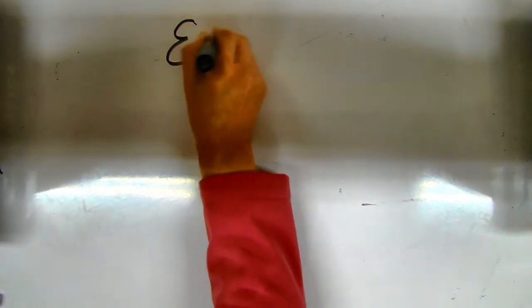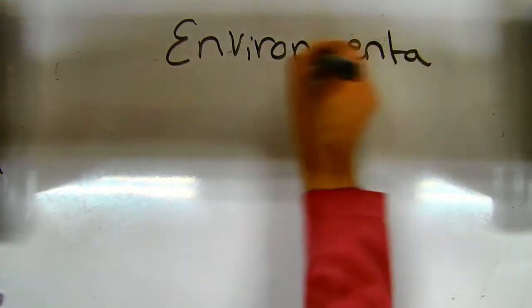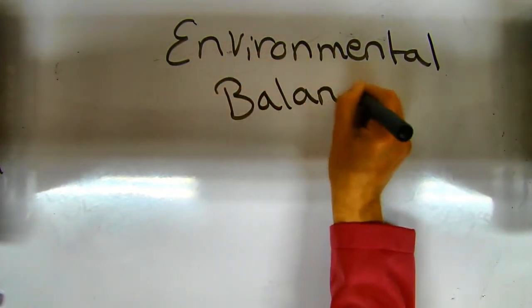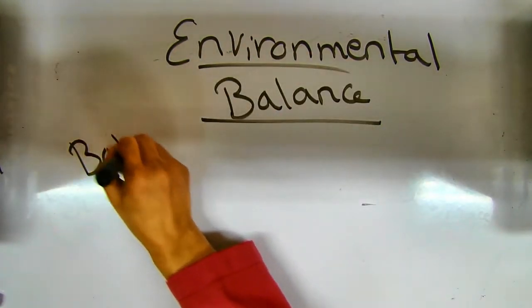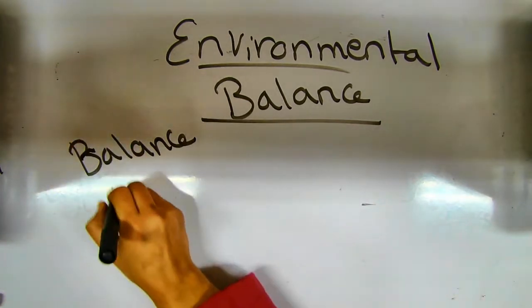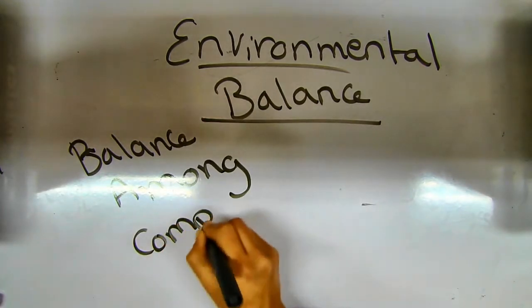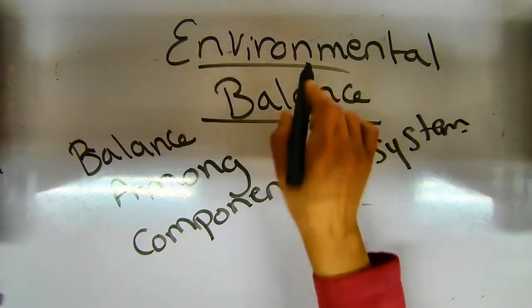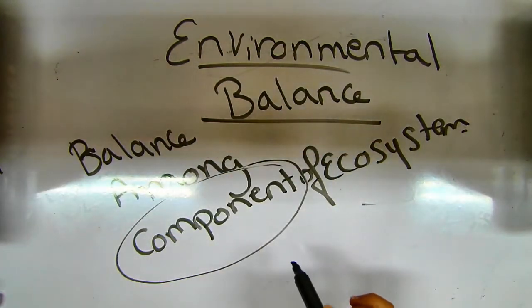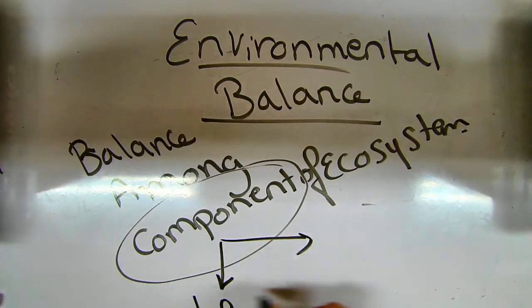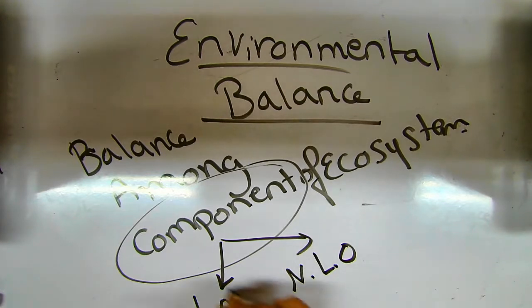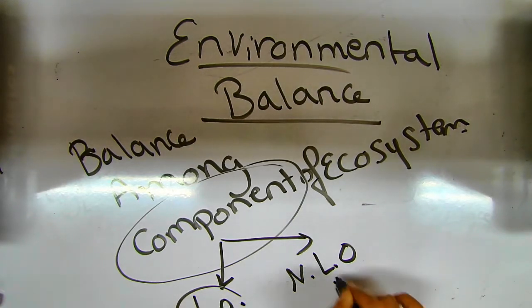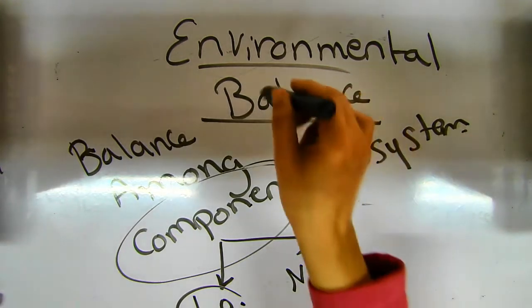Number two: environmental balance. Environmental balance means the balance among the components of the ecosystem — which are living organisms and non-living organisms. There must be balance between living things like animals, fungi, and algae, and non-living things like water, air, and soil, for environmental balance to occur.